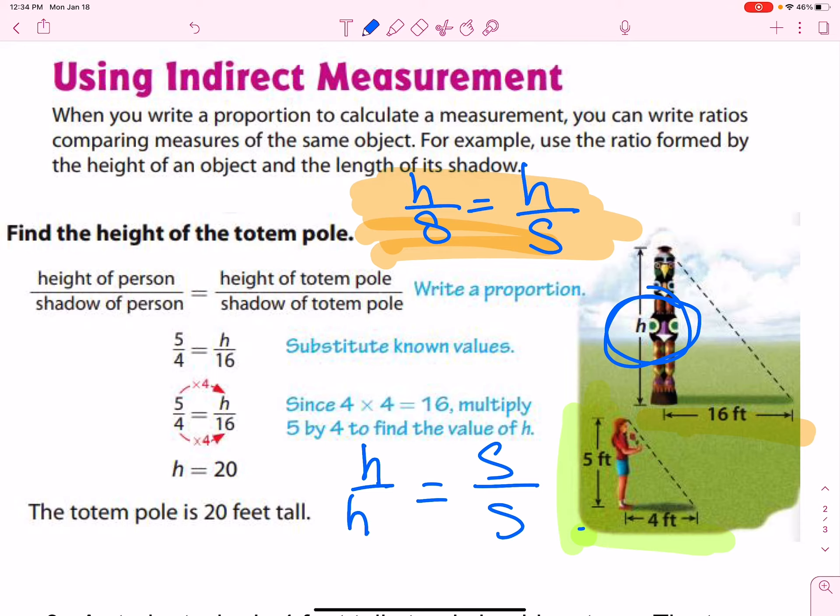We have the girl is five feet tall, her shadow four feet long. We don't know the height of the totem pole, but we measured its shadow to be 16 feet long.